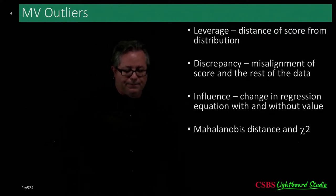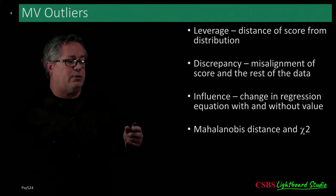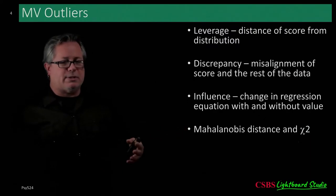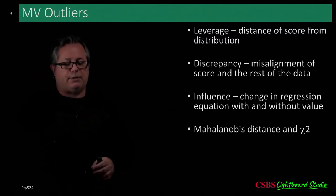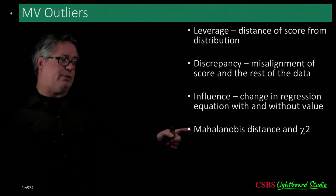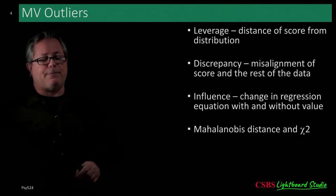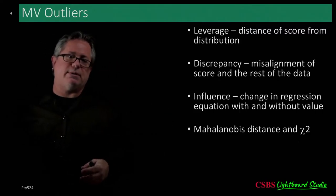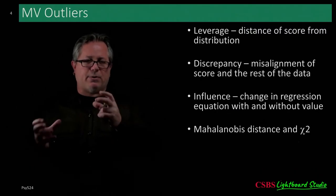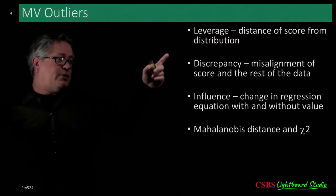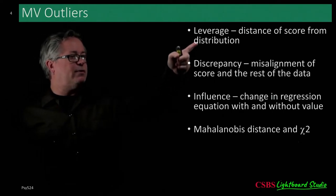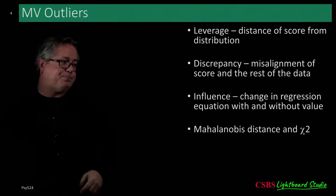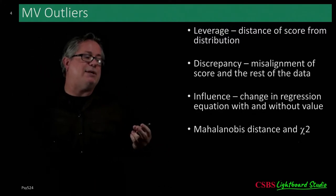In SPSS there are statistics to look at how slopes change with and without a particular score, giving you an idea of its influence. We also look at Mahalanobis distances — how data points combine to represent multivariate outliers. It gives you, in chi-squared units, how far each point is from the centroid of all points in multivariate space. Mahalanobis distance is a multivariate test for outliers representing problematic combinations of scores.